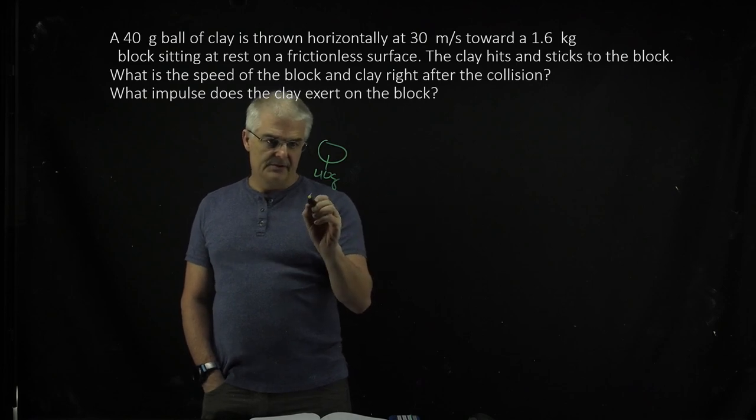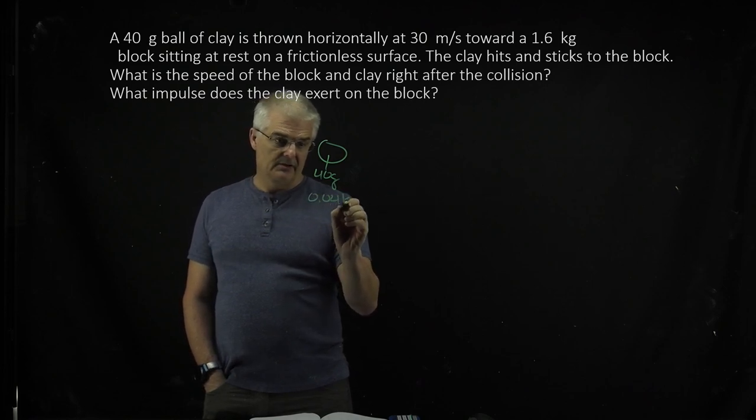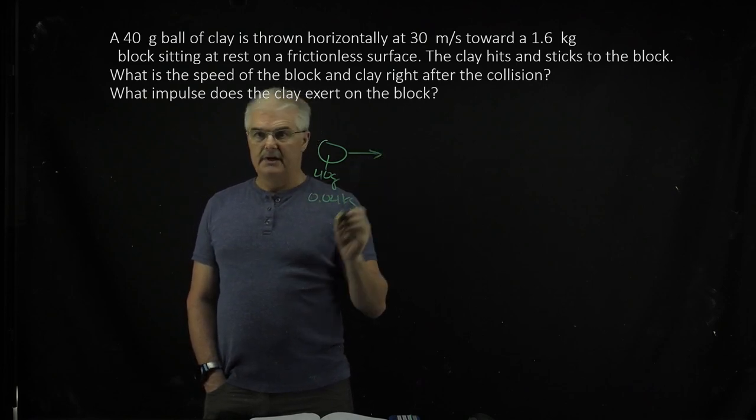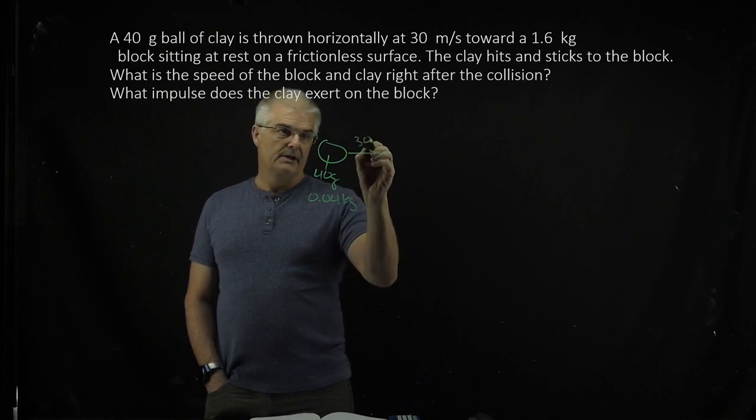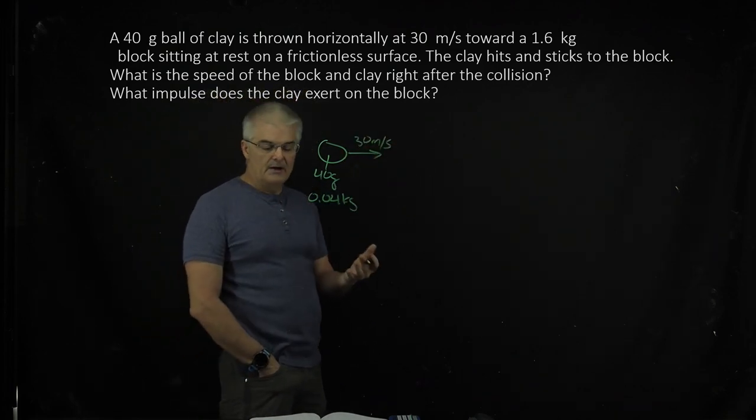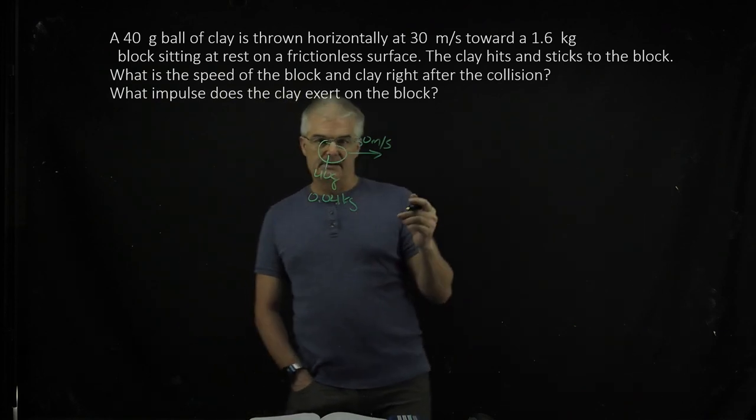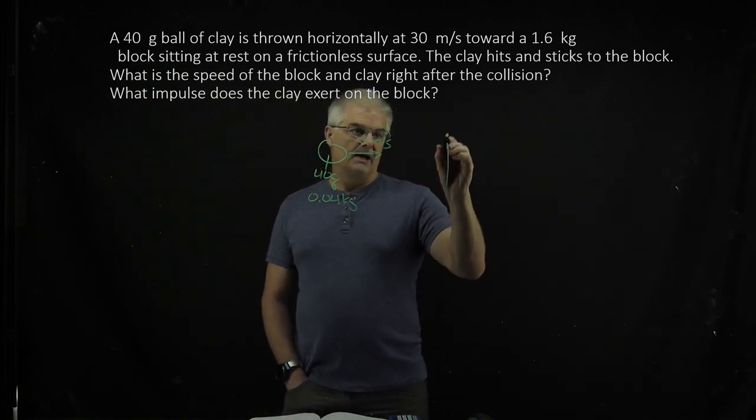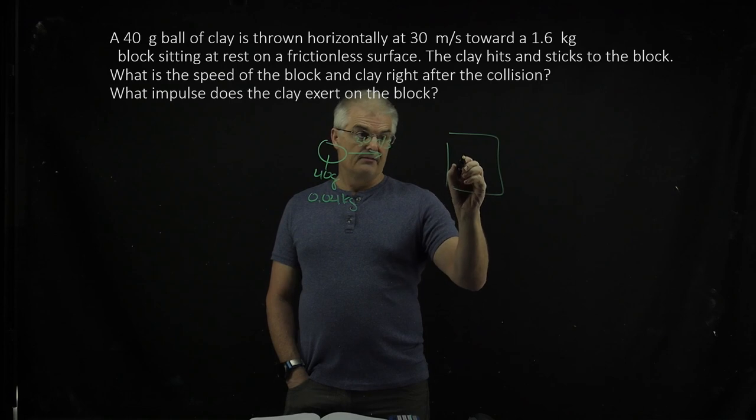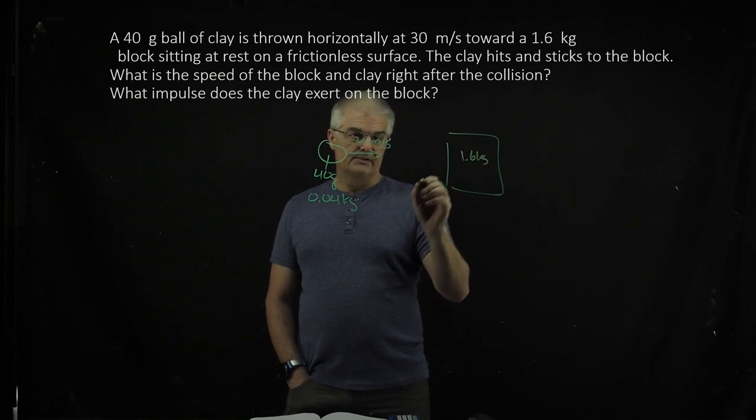40 grams is 0.04 kilograms, and it's moving quite fast at 30 meters per second. So notice how I'm going to draw everything out. It's so important to draw things out. It then hits a block that has a mass of 1.6 kilograms.